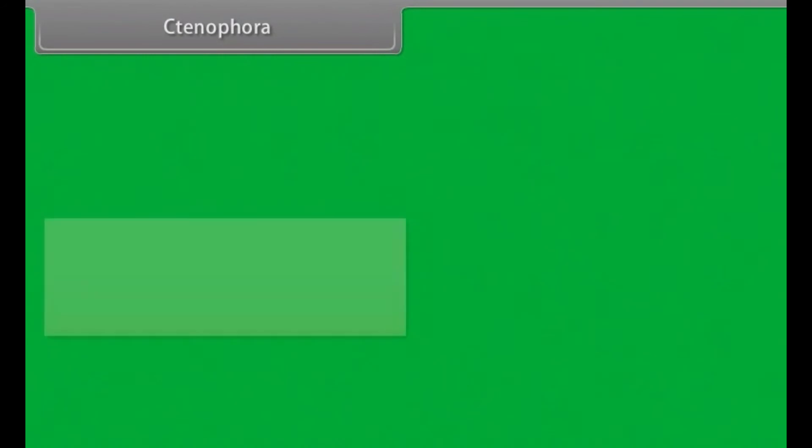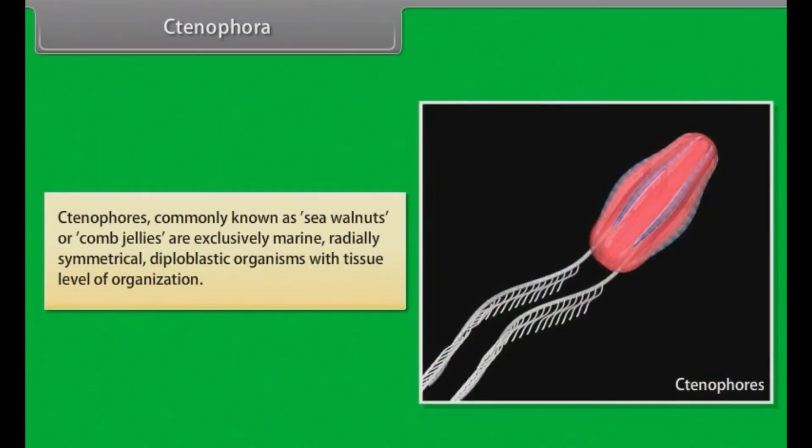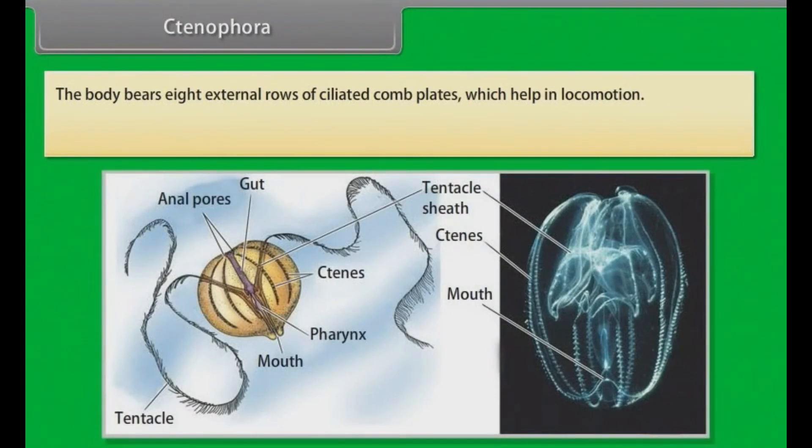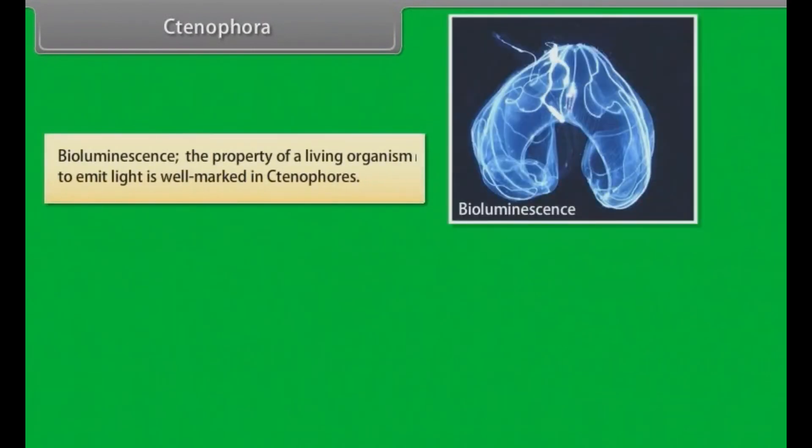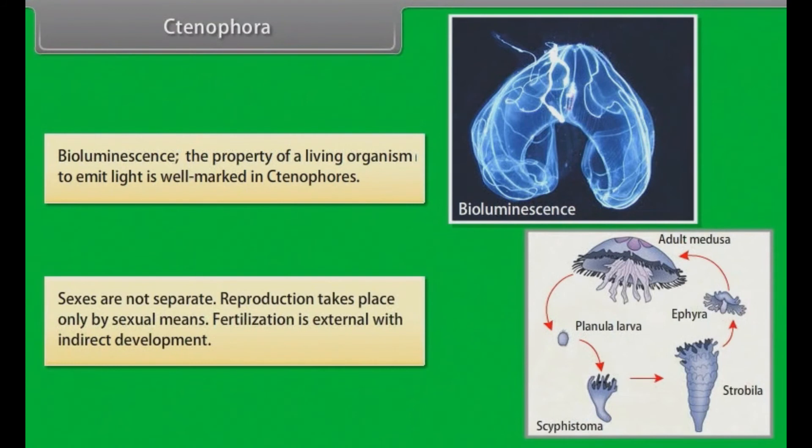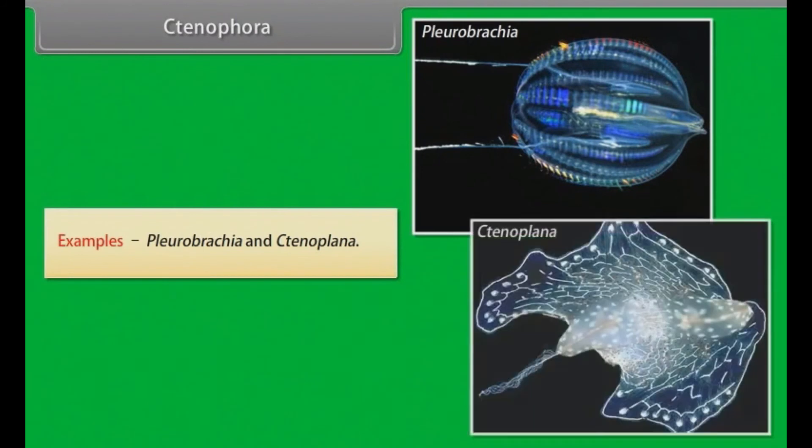Ctenophora. Ctenophores, commonly known as sea walnuts or comb jellies, are exclusively marine, radially symmetrical, diploblastic organisms with tissue level of organization. The body bears eight external rows of ciliated comb plates, which help in locomotion. Digestion is both extracellular and intracellular. Bioluminescence, the property of a living organism to emit light is well marked in ctenophores. Sexes are not separate. Reproduction takes place only by sexual means. Fertilization is external with indirect development. Example: Pleurobrachia and Ctenoplana.